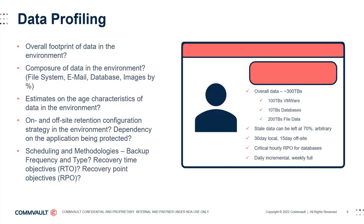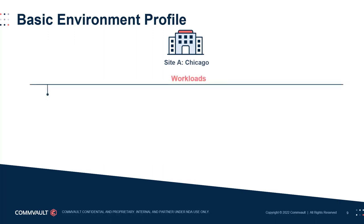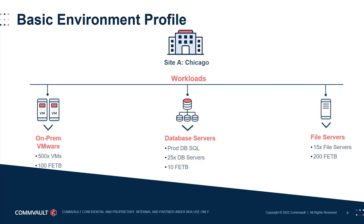Now let's focus on building some basic data profiles. Profiles grow in value with the more data you can collect. In this example, we have a top-level view where our location, Chicago, has a little over 300 terabytes of data to manage, spread across three different data types: 100 terabytes across 500 virtual machines, 25 SQL database servers consisting of 10 terabytes, and 200 terabytes of file system data. This level of data capture can be useful, but can really only be used for calculating licensing for Commvault Complete Data Protection. The more basic the data profile, the more limited the design potential and the more assumptions and caveats your solution architecture will contain.